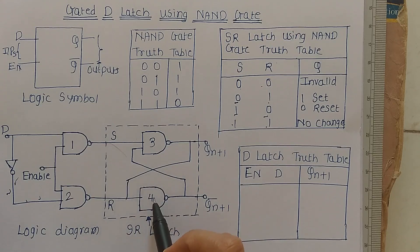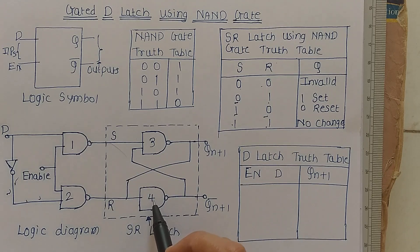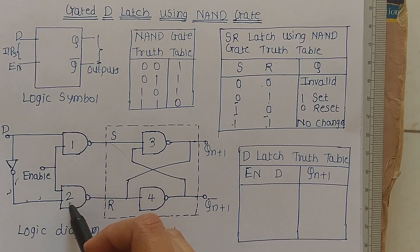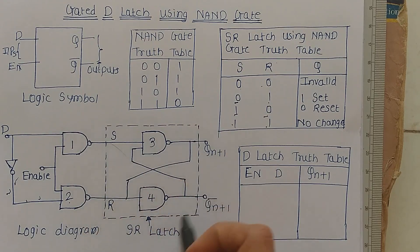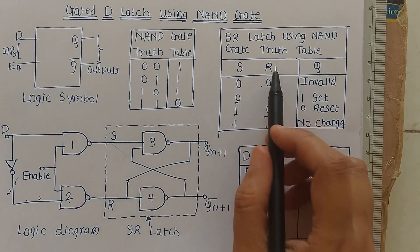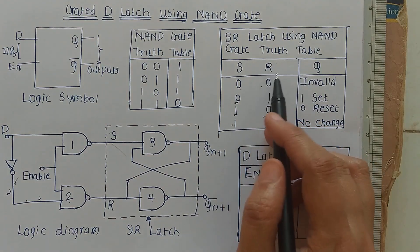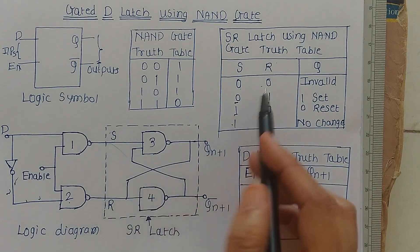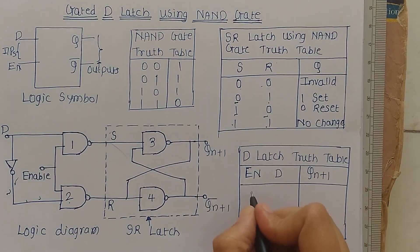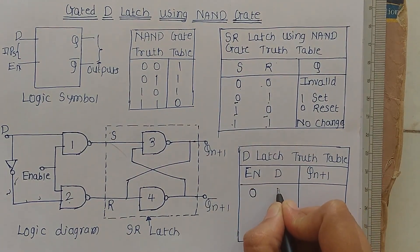To construct this circuit, two NAND gates are connected in a cross-coupled way. When studying the working of the gated D latch, when NAND gate 1 and NAND gate 2 outputs are available, we will not go into the detail of the SR latch because we have already studied it. I have drawn the truth table of the SR latch using NAND gates, and when we get S and R inputs we will refer to that truth table to get the output.